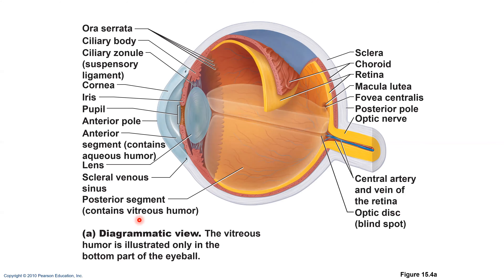Here you can see a normal pupil, a constricted pupil, and a dilated pupil. To constrict the pupil, you contract the circular muscles called the sphincter pupillae muscle — contracting this muscle decreases the pupil size. When you relax this muscle, the pupil returns to normal size. To dilate the pupil, you contract the dilator pupillae muscle — the radial muscle here.